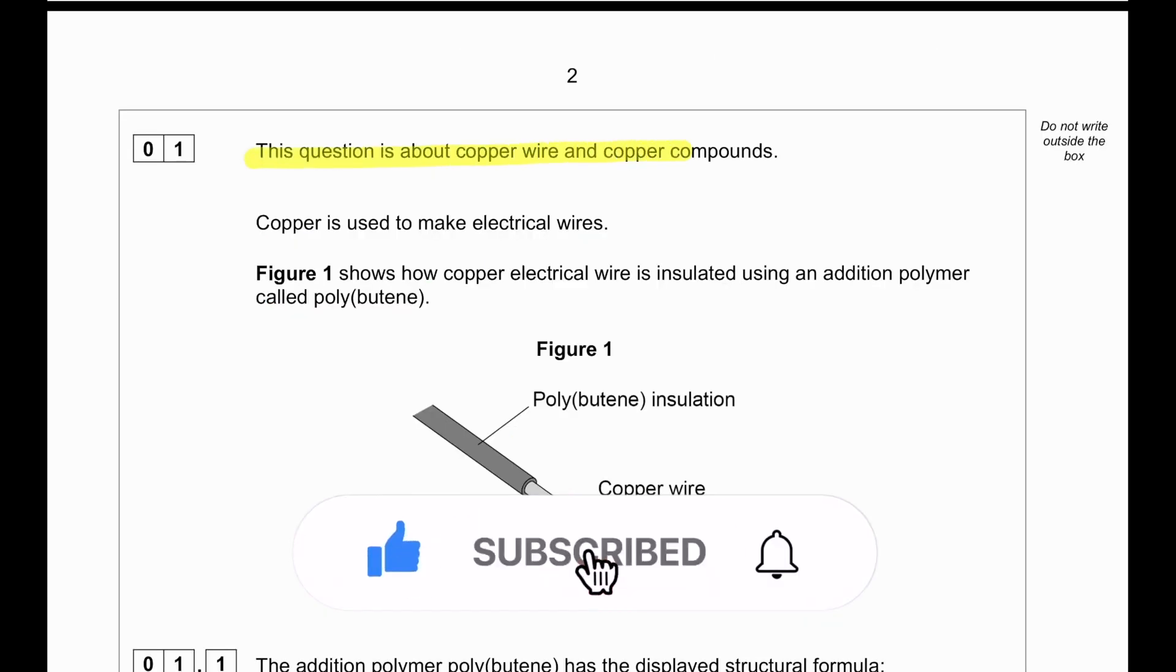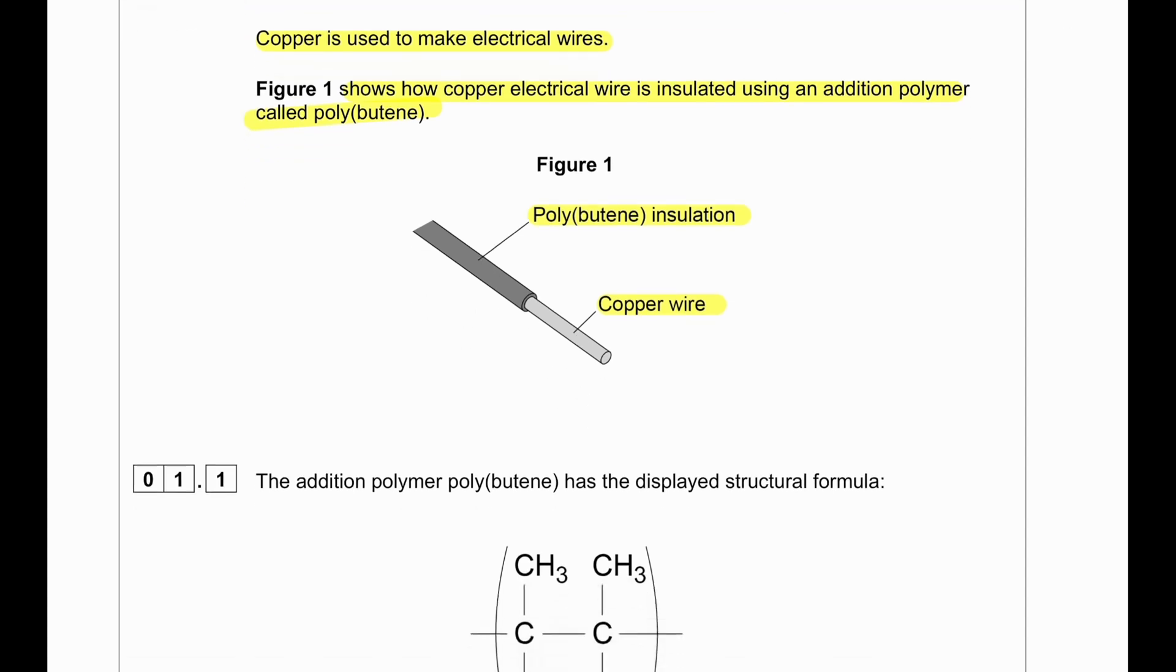This question is about copper wire and copper compounds. Copper is used to make electrical wires. Figure 1 shows how copper electrical wire is insulated using an addition polymer called polybutene. Polybutene is an insulation and we can see the copper wire inside.